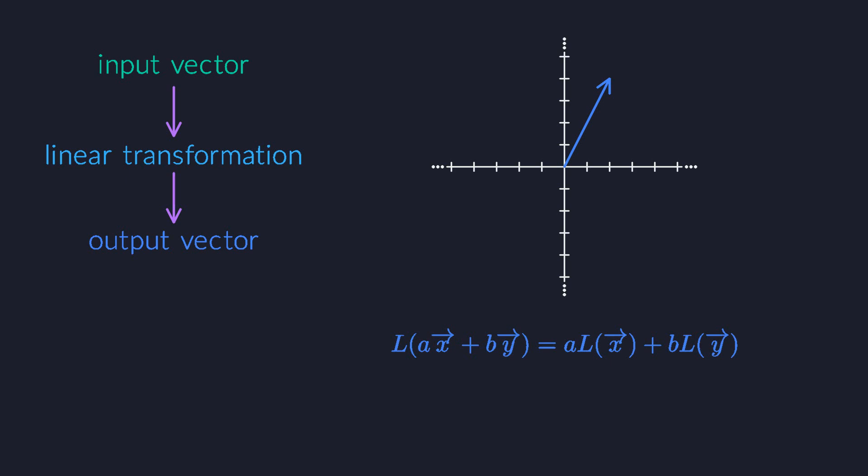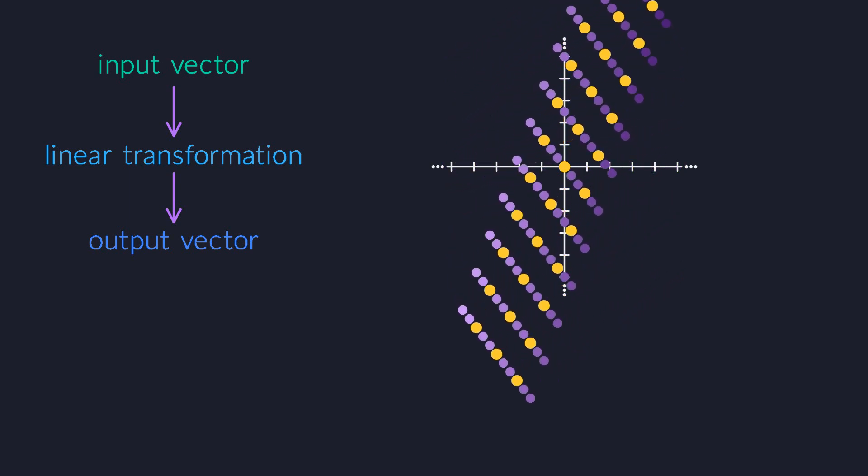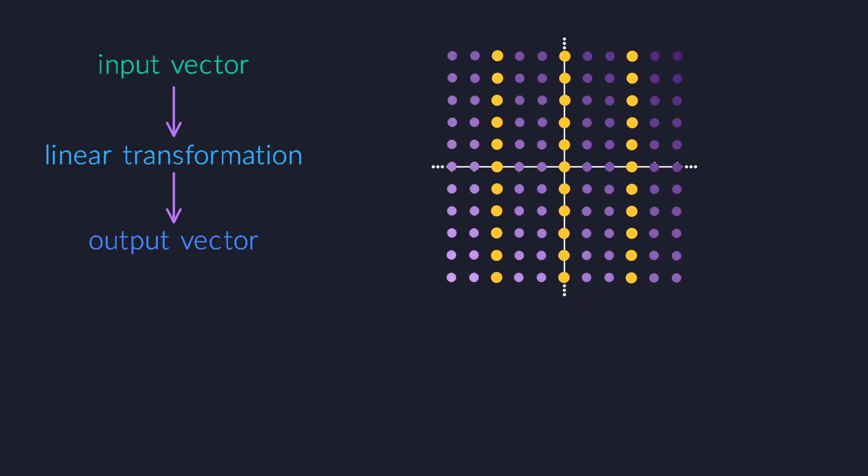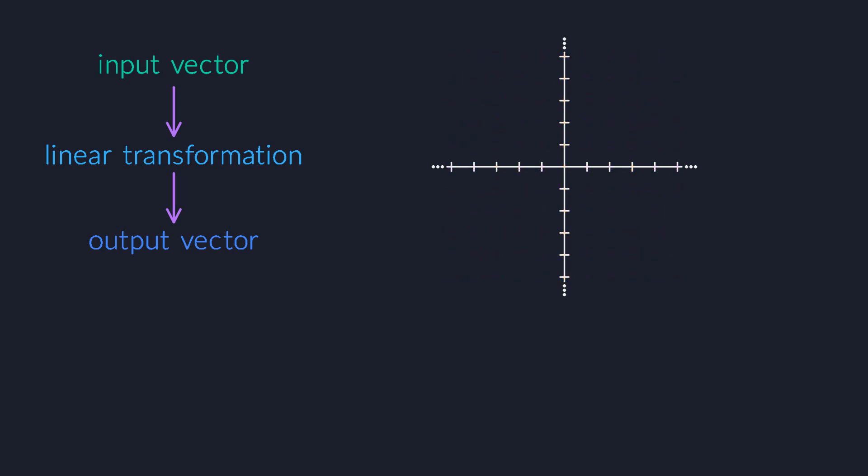First, a quick recap. A linear transformation takes a single input vector and produces a new vector as output. It does so in a linear way, which means that it distributes nicely over linear combinations. After choosing a specific basis, the linear transformation is represented by a matrix.